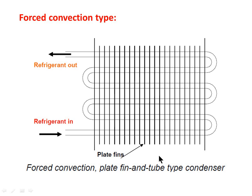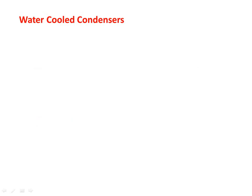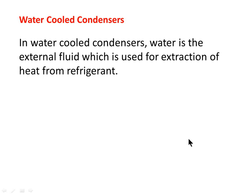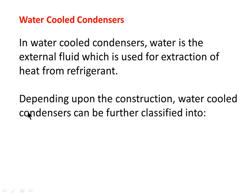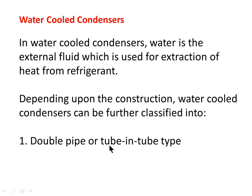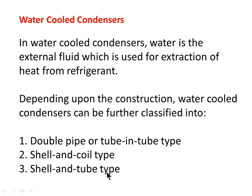Since no other medium of heat extraction is used, it is also an air-cooled type condenser. Next are water-cooled condensers. In water-cooled condensers, water is the extraction fluid used for heat extraction from the refrigerant. Depending on construction, water-cooled condensers are further classified into double pipe or tube-in-tube type, shell and coil type, and shell and tube type.